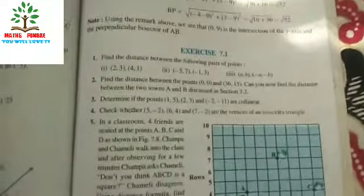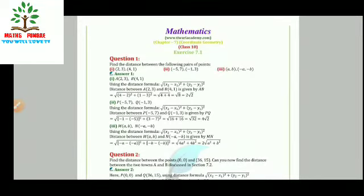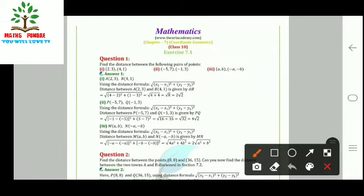Let us solve Exercise 7.1 of Chapter 7, Coordinate Geometry. Question 1 asks us to find the distance between the following pairs of points. For part (i), A(2, 3) and B(4, 1): taking x₁ = 2, y₁ = 3, x₂ = 4, y₂ = 1 and applying the distance formula AB = √[(4−2)² + (1−3)²] = √[4 + 4] = √8 = 2√2.